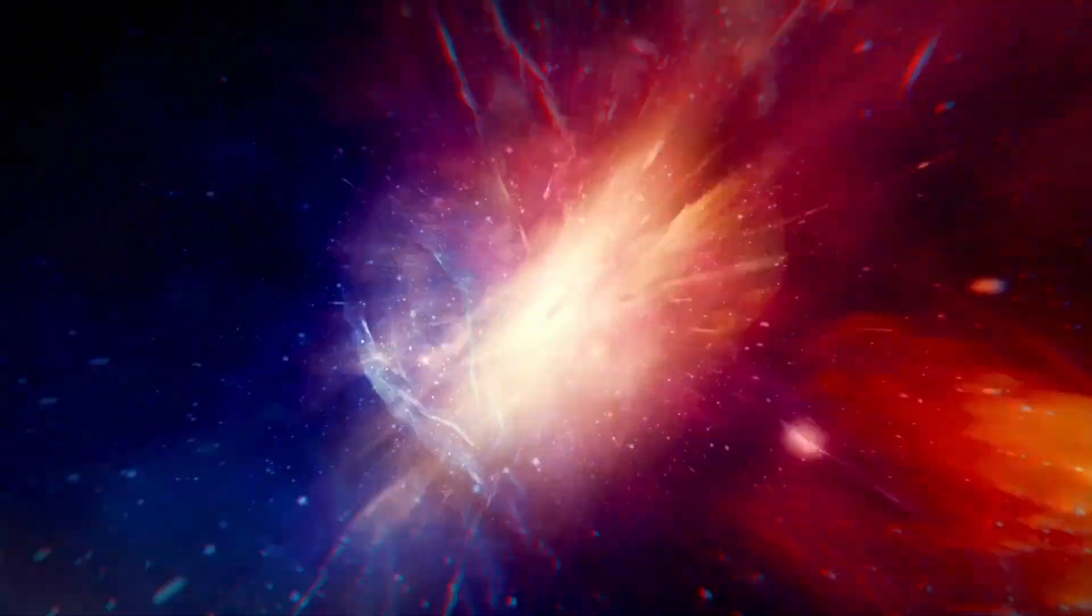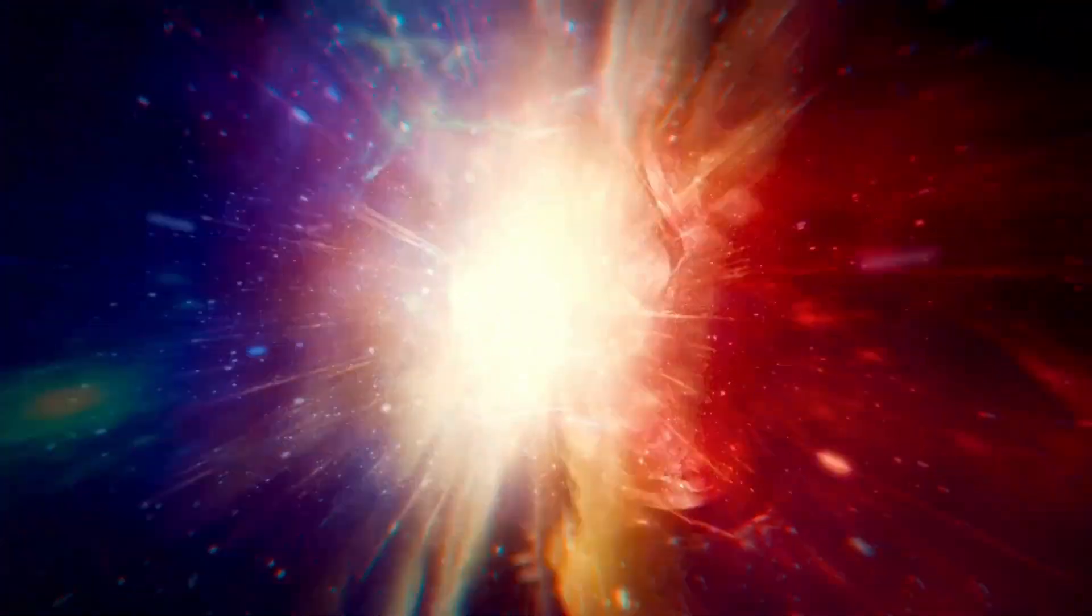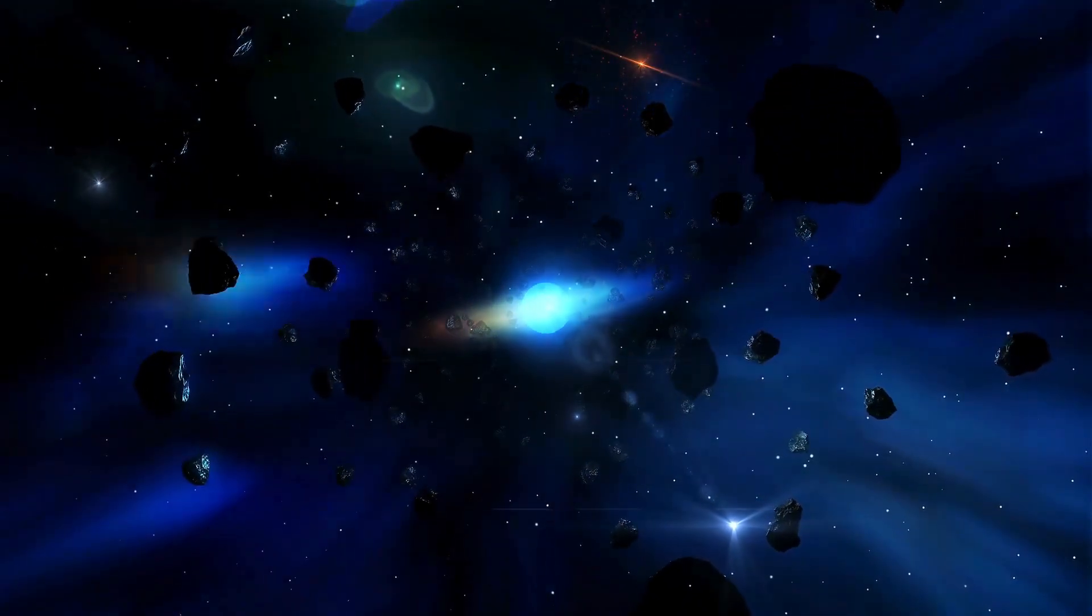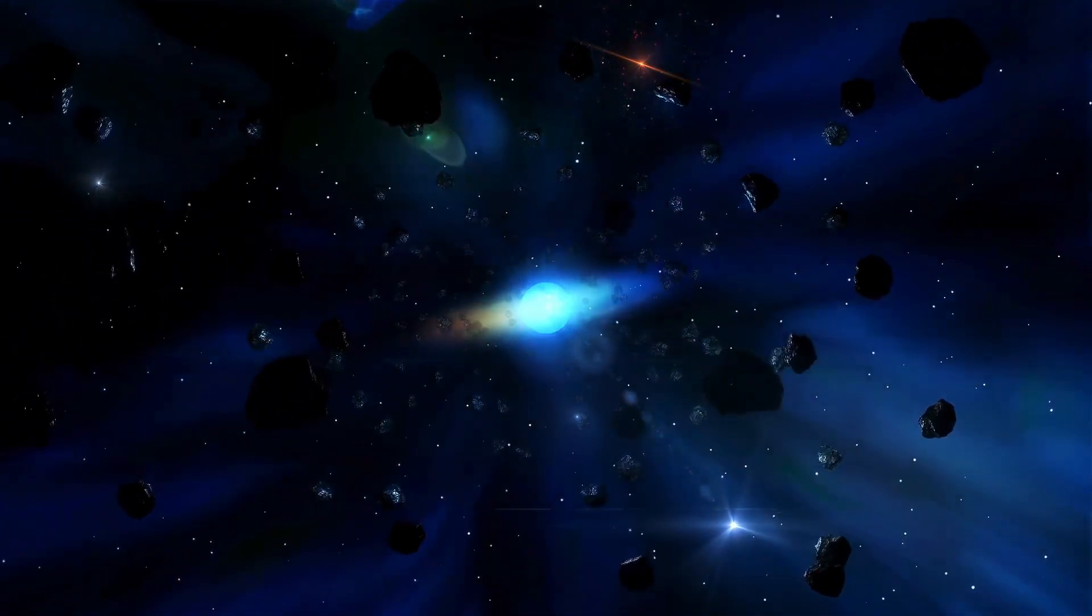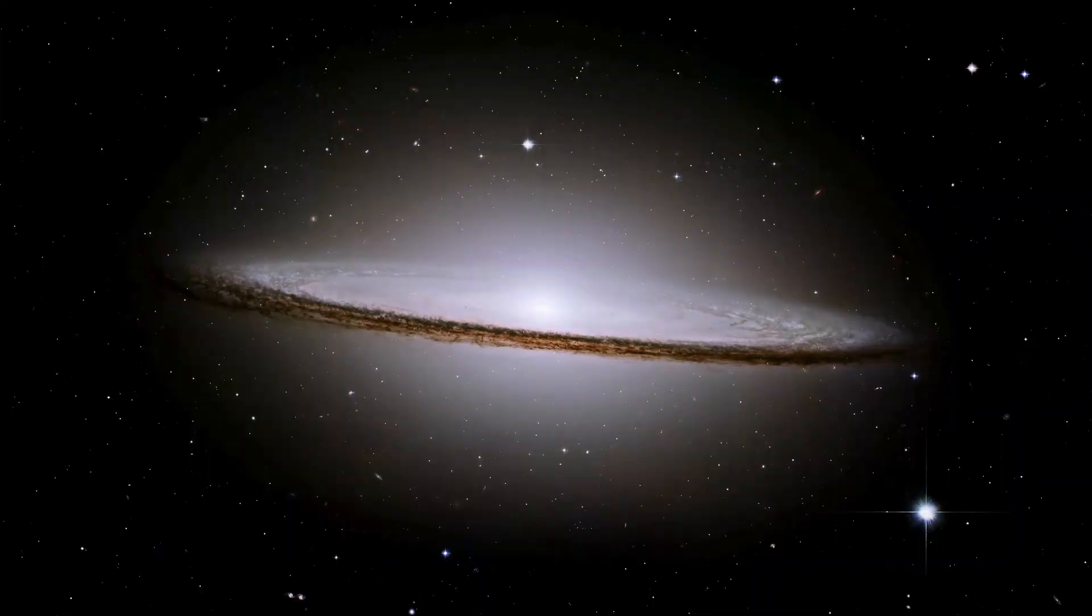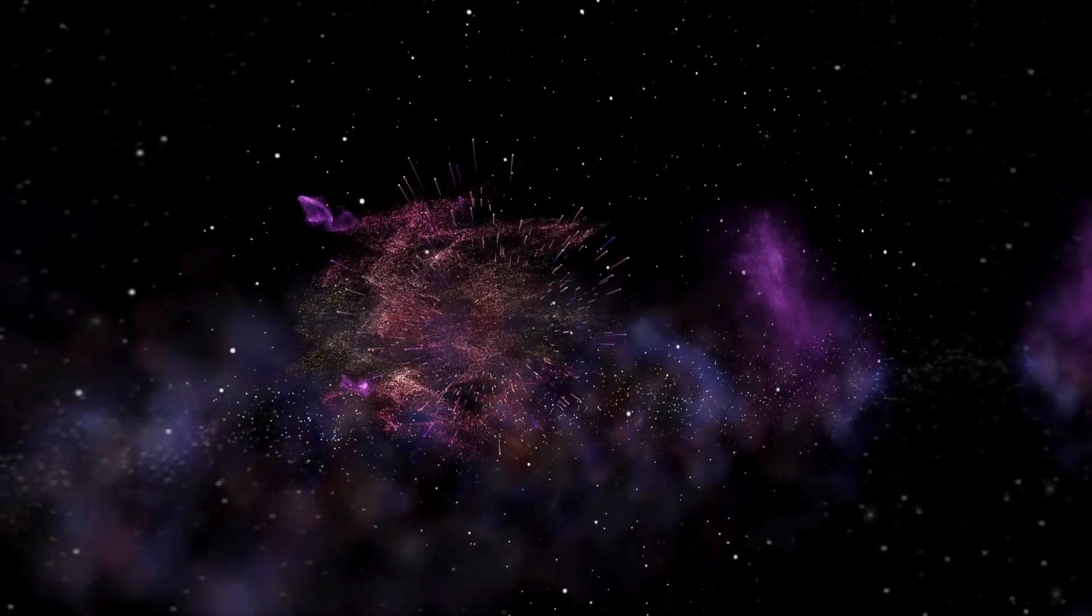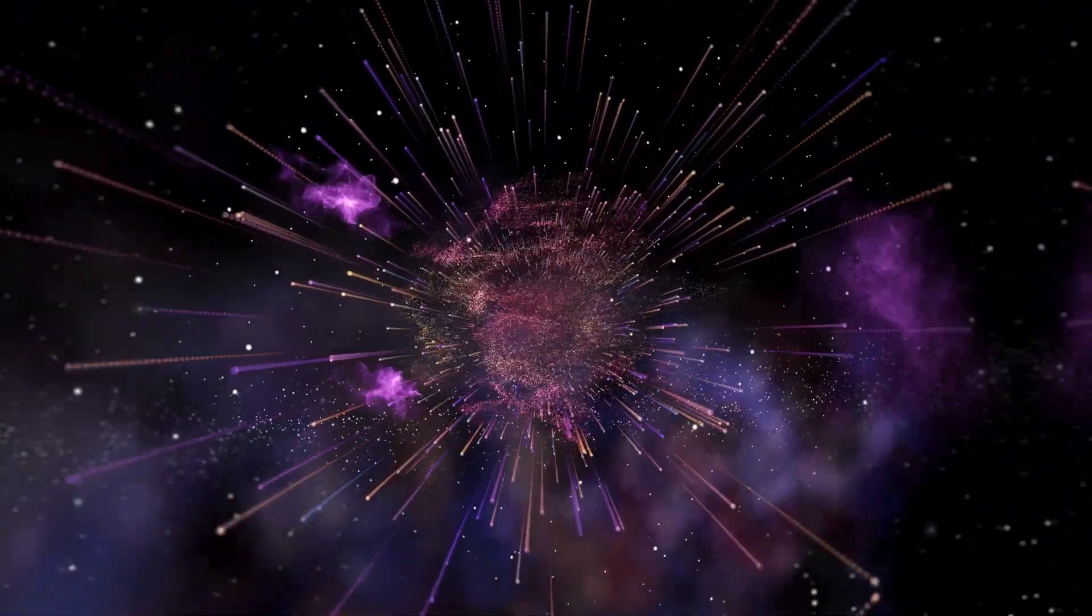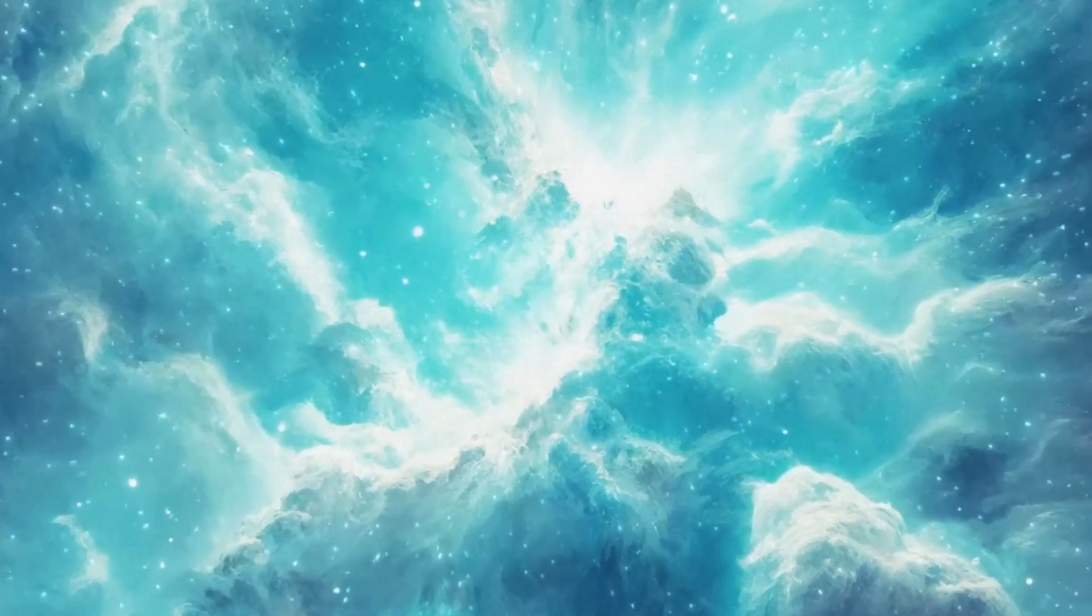Scientists monitor the sun's magnetic activity using various instruments and techniques. Observatories equipped with powerful telescopes, both on Earth and in space, provide detailed images of the sun's surface and its sunspots. Instruments like the Solar and Heliospheric Observatory (SOHO) and the Solar Dynamics Observatory (SDO) measure the sun's magnetic field and its changes over time. One key indicator of a looming magnetic reversal is the behavior of sunspots, which become more pronounced as they move toward the sun's equator, signaling the magnetic field is preparing to flip.